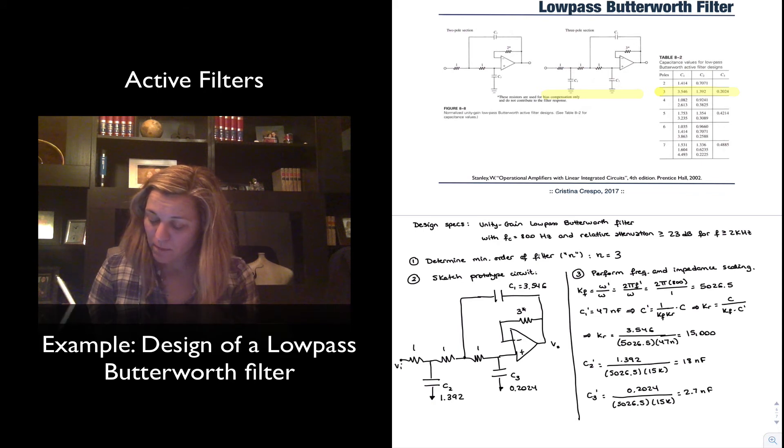And then finally, my value of resistor R prime is just going to be Kr times R. R is 1 and Kr is 15,000, so this is going to be 15K ohms.